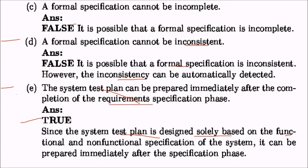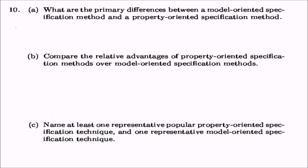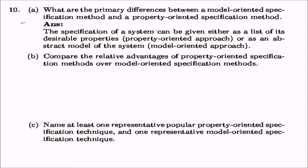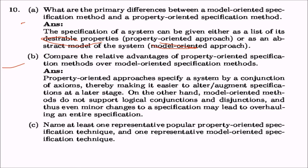Tenth question: what are the primary differences between model-oriented and property-oriented specification methods? The specification of a system can be either a list of desirable properties (property-oriented) or a track model (model-oriented). Property-oriented approaches specify a system by a conjunction of axioms, making it easier to alter and augment a specification at a later stage. Model-oriented methods do not support logical conjunctions and disjunctions, which are present in property-oriented approaches.